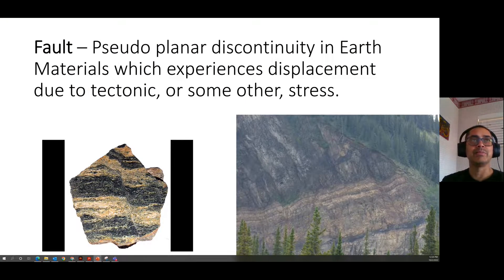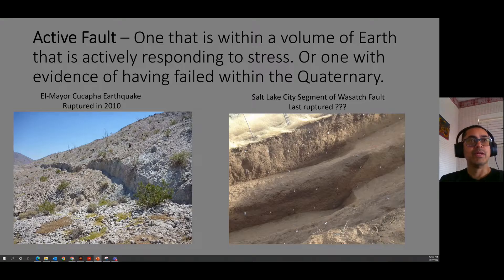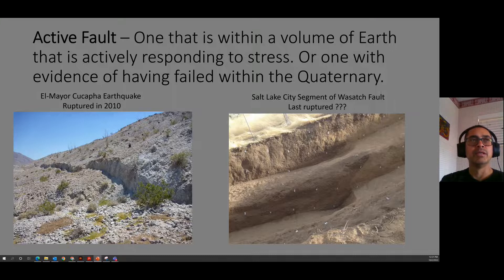A fault is a planar discontinuity in the Earth that experiences displacement due to tectonics or other stress. When these move, that's an earthquake, and we call those active faults. An active fault is one within a volume of the Earth actively responding to stress. We regulate these in places like Utah and California — building along them is restricted. We define activity based on evidence of failure within the Holocene, not just the Quaternary, which is the last two million years.